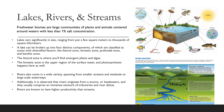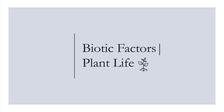Rivers are known to have higher productivity than streams because of their dissolved oxygen (DO) level. On the right, we have diagrams showing the actual outline and components that make up lakes and rivers. Now we'll get into biotic factors, starting with plant life presented by botanist Karis Bloor.